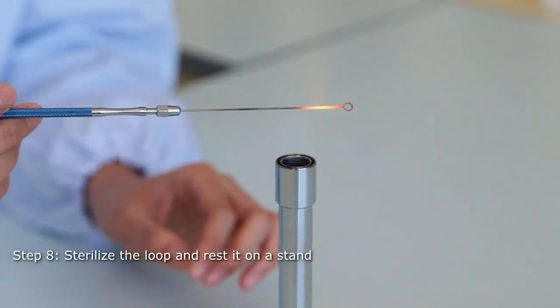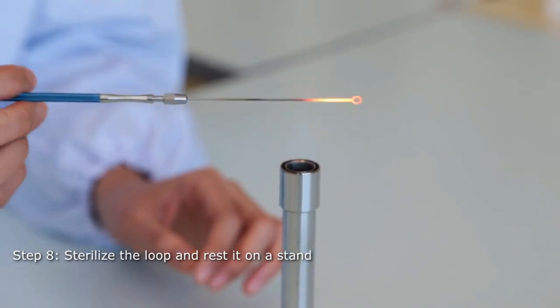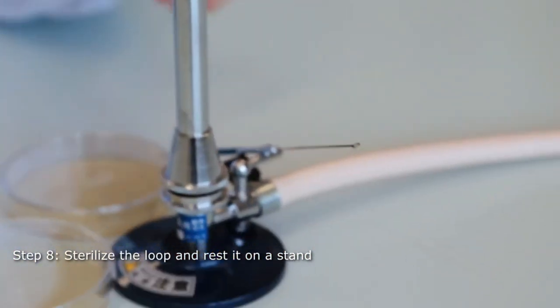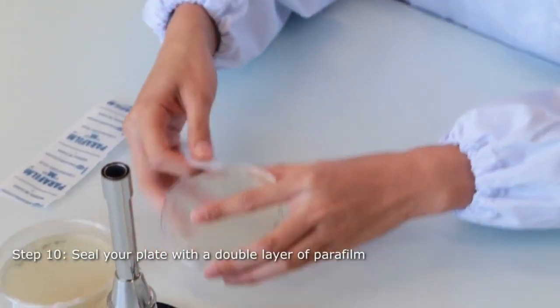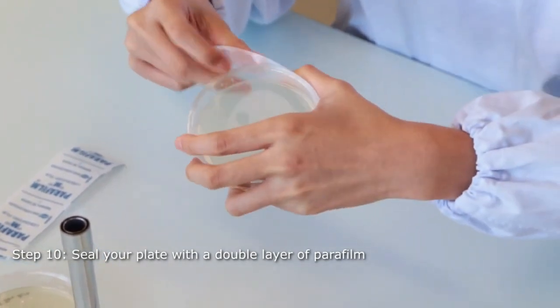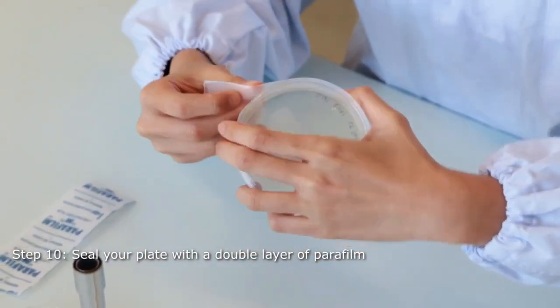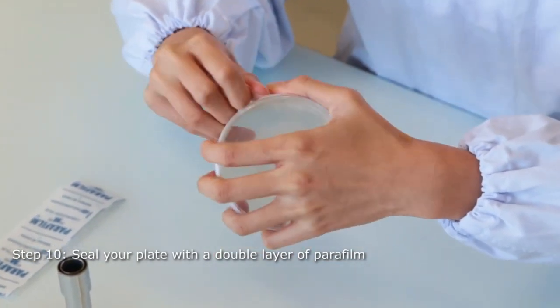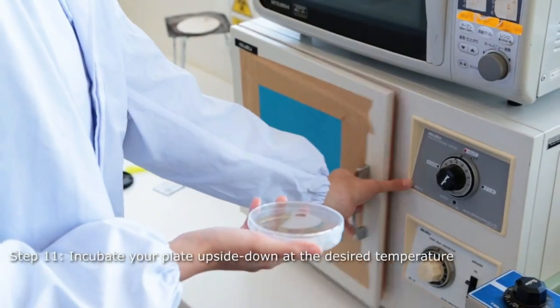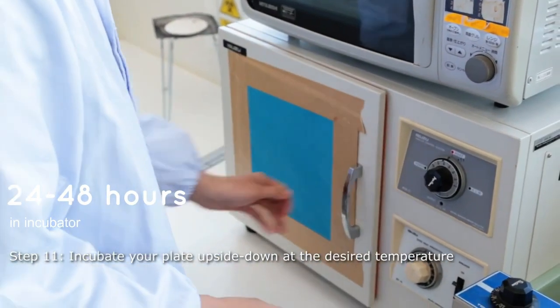Then, we sterilize the loop after use, and seal the plate with parafilm. Both spread and streak technique that we had done, we begin with the aseptic technique to avoid contamination. And now, it is ready for incubation for about 24 to 48 hours in incubator.